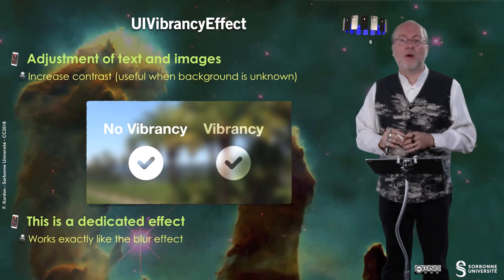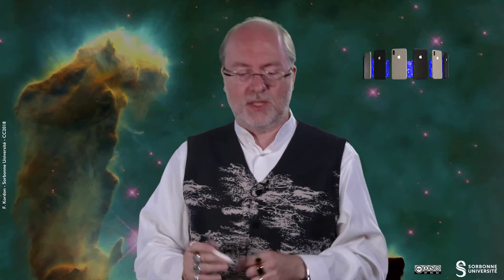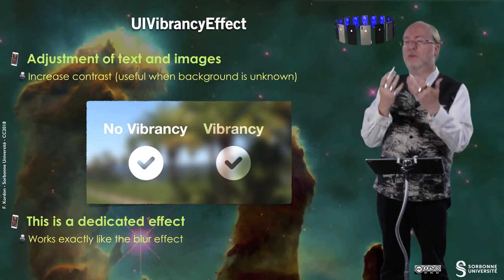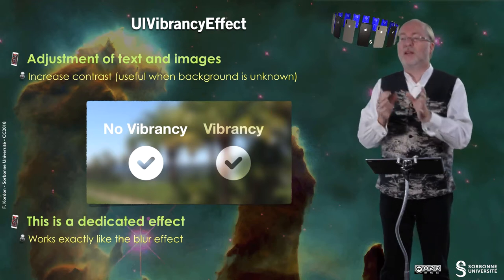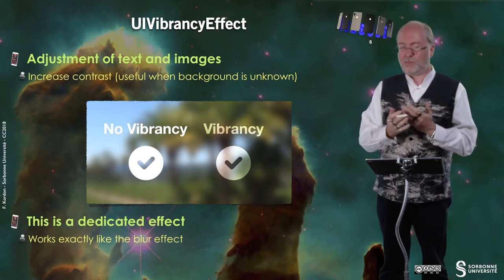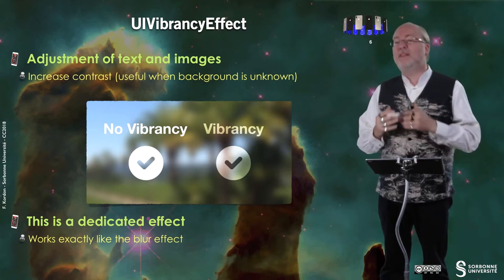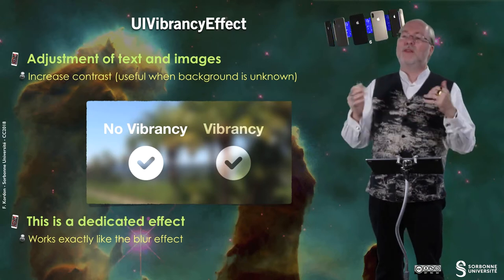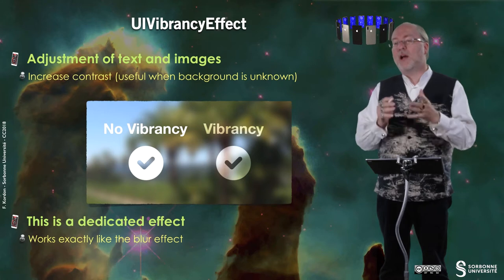Just a word about vibrancy effect. The idea is to adjust text and images. Here I have my blur effect without vibrancy, with some white text in it. And here I have some vibrancy — in the first part you don't have the transparency that applies to the colors, and here you have it that applies a little bit on the colors. So you can like it and decide to use it. This is a dedicated effect and this is a way to parameterize your effect in the view.